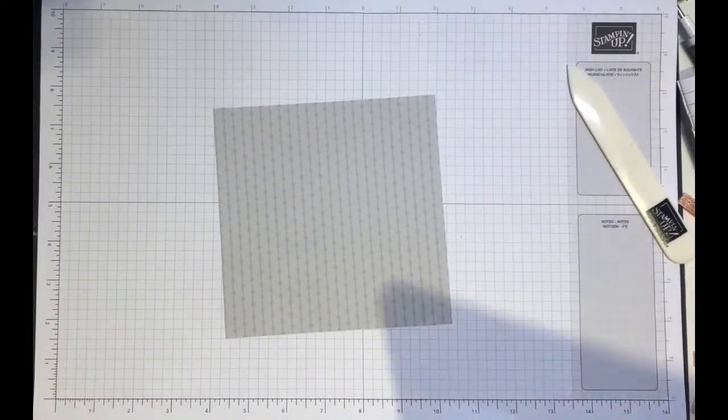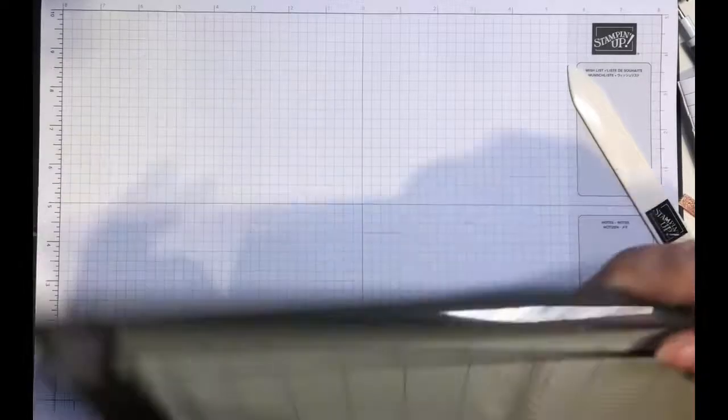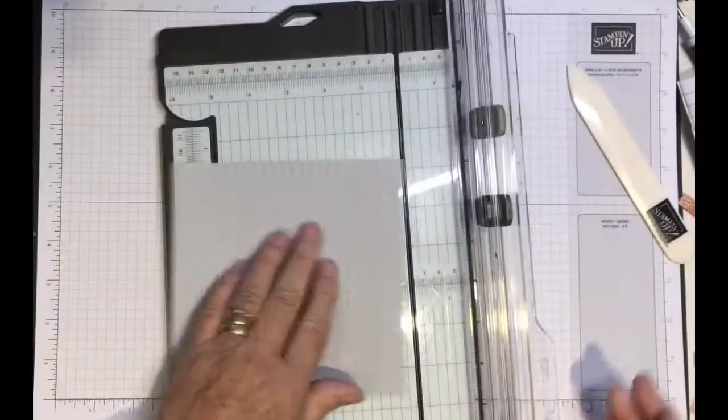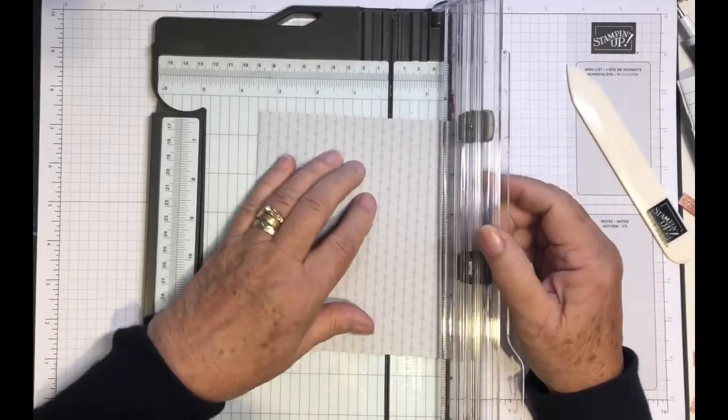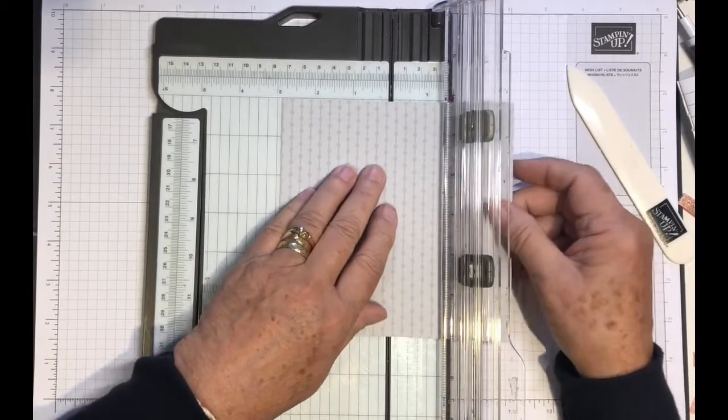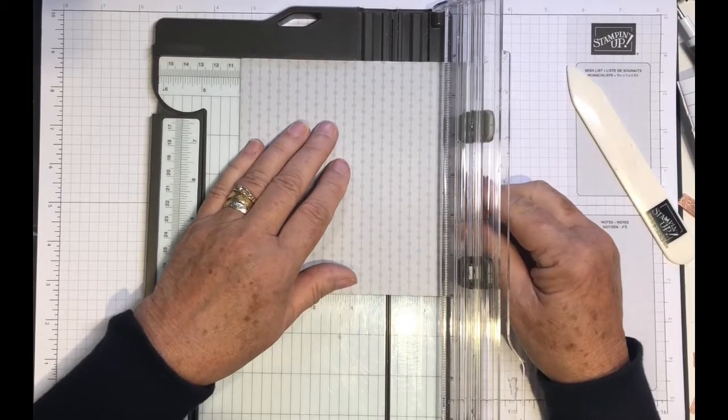So I'm going to use this gray one and we just need our paper trimmer and we're going to just chop two inches off so that it actually measures four by six.